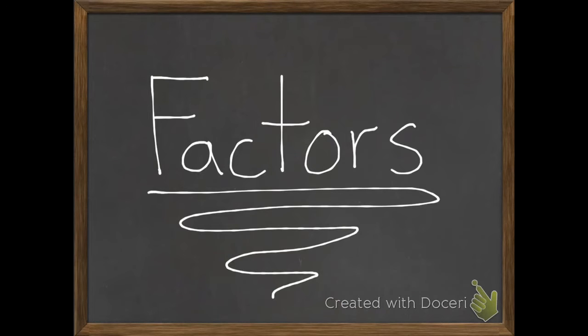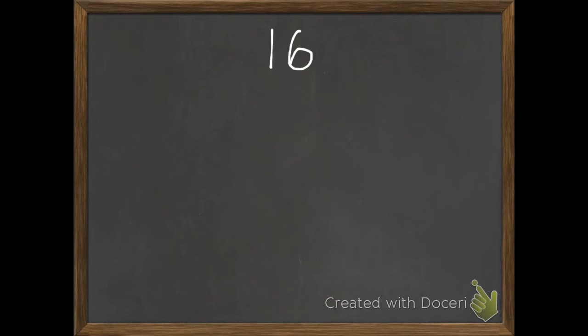Well, today we're going to kind of be working backwards. So I have a product of 16, and I want to find all of the factors, the numbers that we multiply together, that could equal 16. To make sure I find all of the factor pairs that equal the product of 16, I'm going to start by seeing if there's something times 1 that equals 16. And there is. 1 times 16 equals 16.